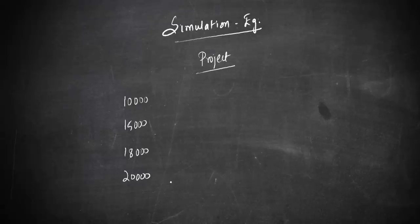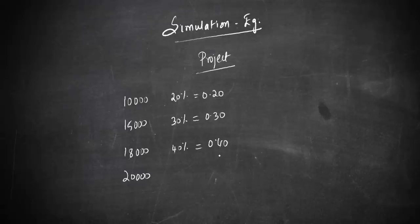Express that number of times as a percentage of total times. For example, history shows a 20% probability of getting 10,000 — meaning on 2 out of 10 occasions you got 10,000, so the probability is 0.20. Similarly, the probability of 15,000 is 30%, or 0.30 — that is 3 out of 10 times. For 18,000 the probability is 40%, or 0.40, and the remaining probability for 20,000 is 10%, or 0.10.